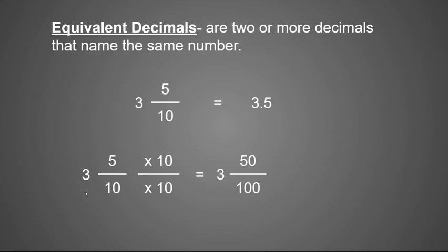my three is going to stay the same and I will multiply five times ten and ten times ten. So I would equal three and fifty one hundredths. So three and five tenths is equal to three and fifty hundredths. This is how I would write it as a decimal three and fifty hundredths.